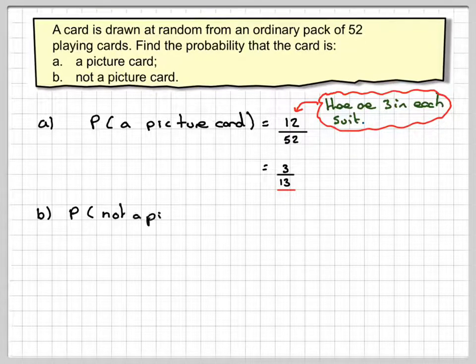Now in part B we want the probability of not a picture card. Now in probability, the probability of an event happening plus the probability of an event not happening must be equal to 1, which is the probability of certainty.